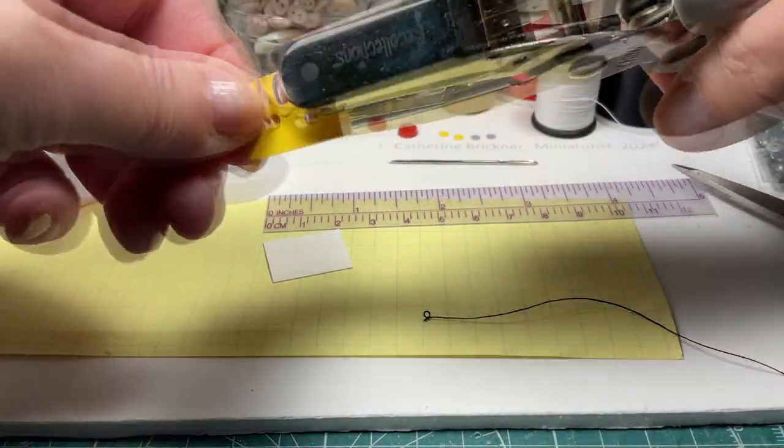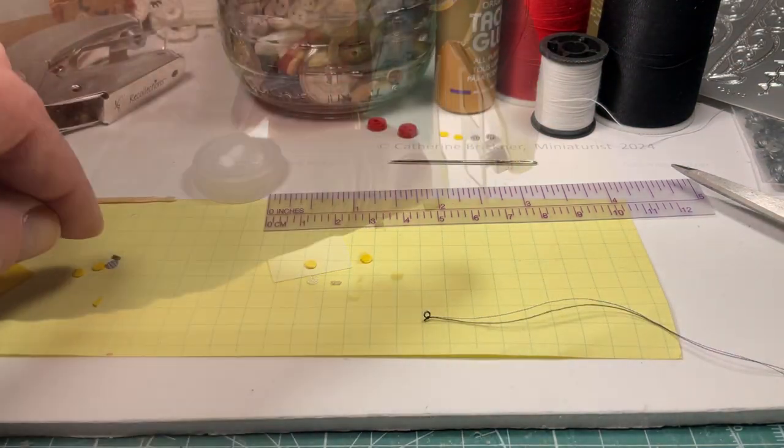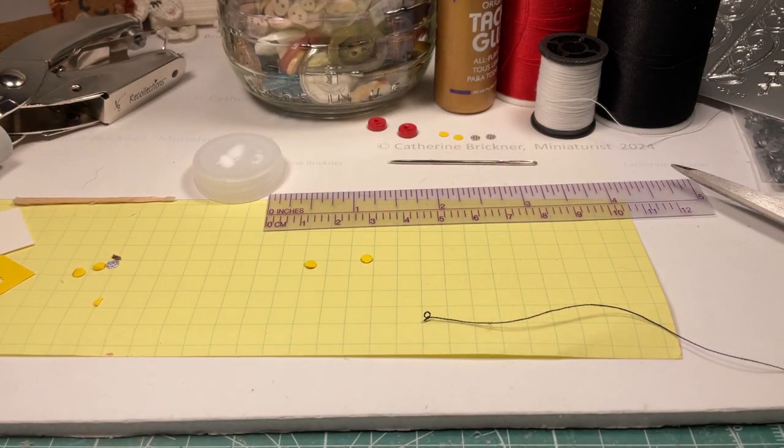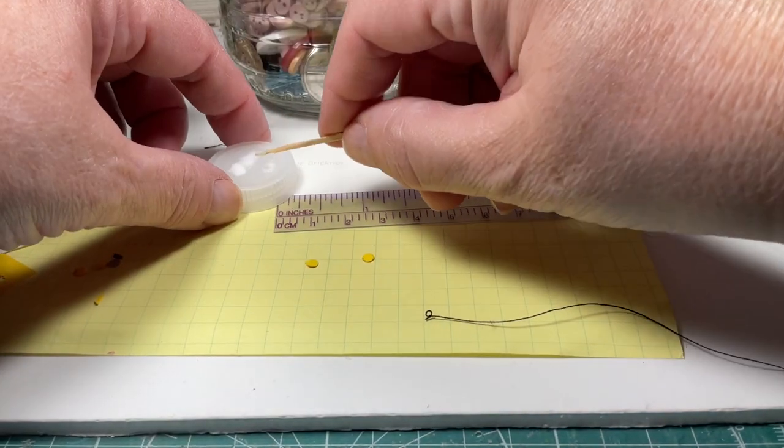To make the inside pieces, hand cut or paper punch two card stock one-eighth inch circles any color of paper because they will not be visible.